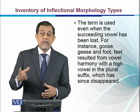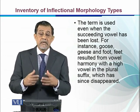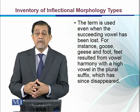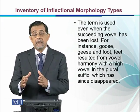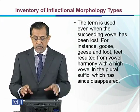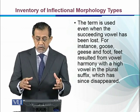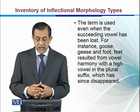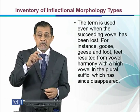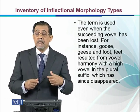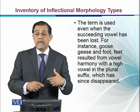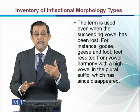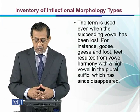The term umlaut is used even when the succeeding vowel has been lost. During the Great Vowel Shift, the changed vowel remained in the word even after the conditioning vowel disappeared. For example, 'goose/geese' and 'foot/feet' result from vowel harmony with a high vowel in the plural suffix — the vowel that triggered the change was later removed from the language, but the altered vowel remained.